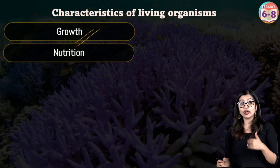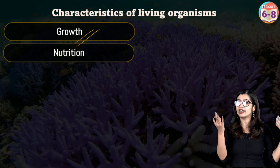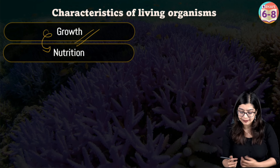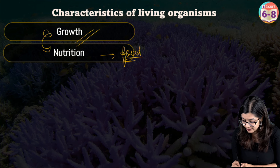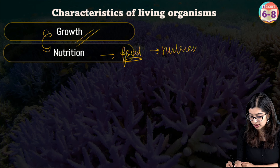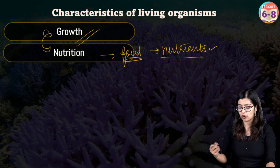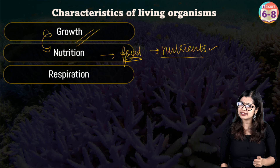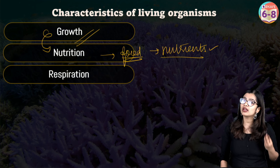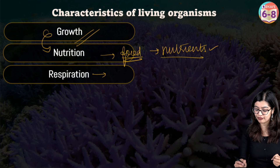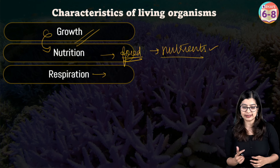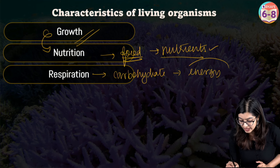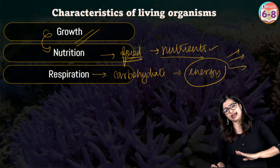For growth to happen, a young organism requires certain nutrients and food items. So living organisms feed on food — food is extremely crucial because from food we get nutrients which our body utilizes in order to grow. For any activity we also require energy. We produce our own energy by the process of respiration, where we break down energy-giving food items like carbohydrates and release energy, which we use to carry out various activities inside and outside the body.